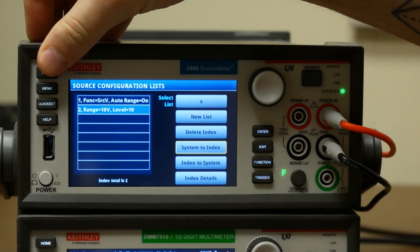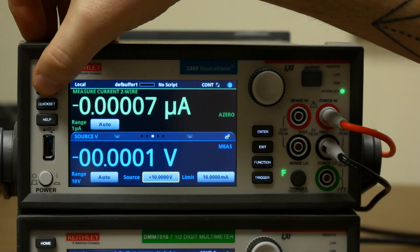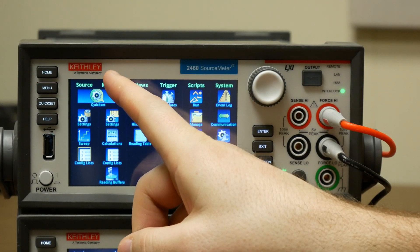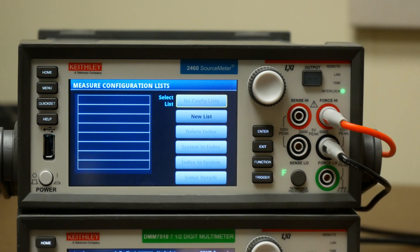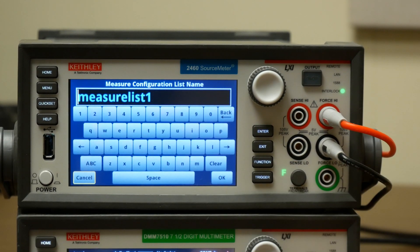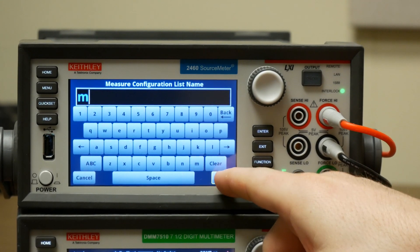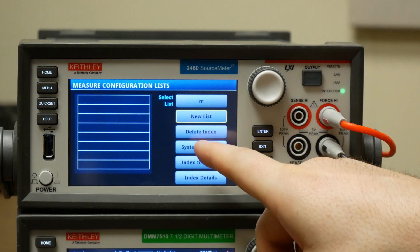Now if you want to create a measure configuration list, it's basically the same process. You're going to go to menu, except for this time under the measure column, you're going to press configuration list. I'm going to create a new list. We will call this one M and add system to index.